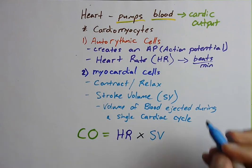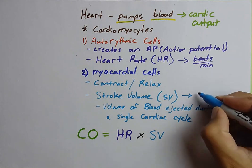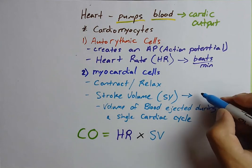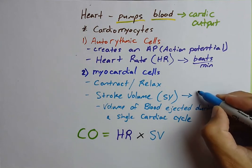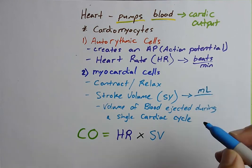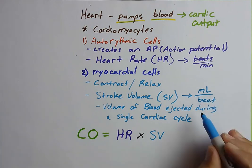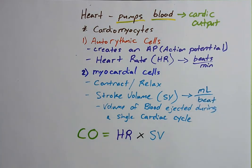The units of stroke volume are milliliters per single beat of the heart — so what's the volume ejected per beat? That's stroke volume. And this is the summary of how the heart functions: cardiac output equals heart rate times stroke volume.